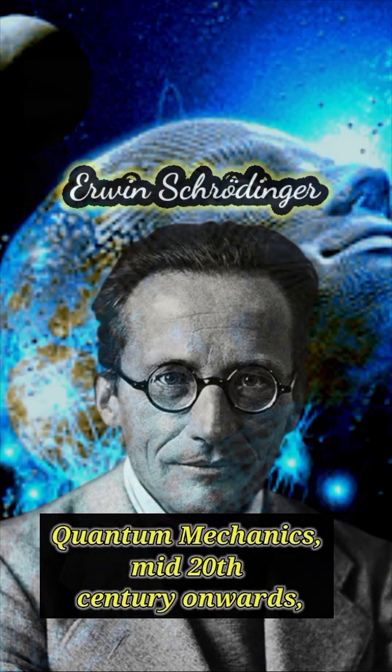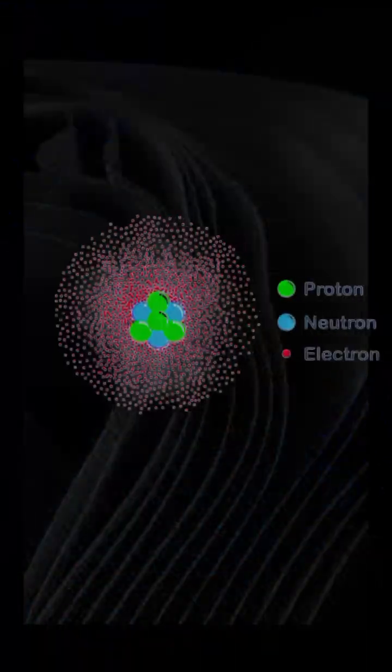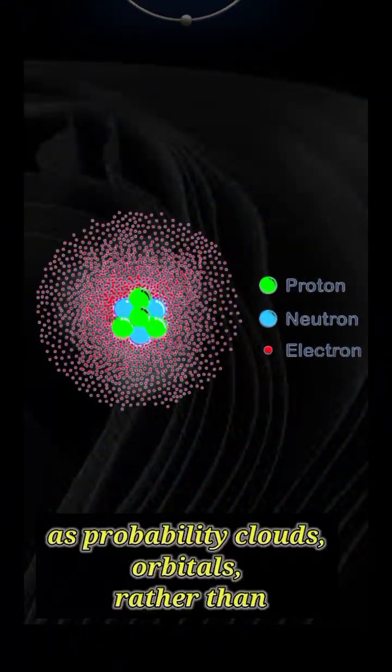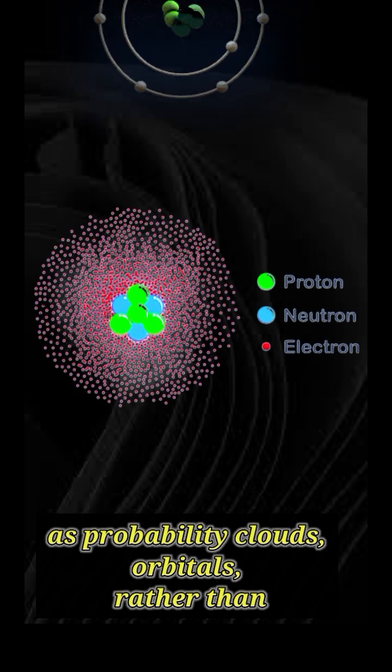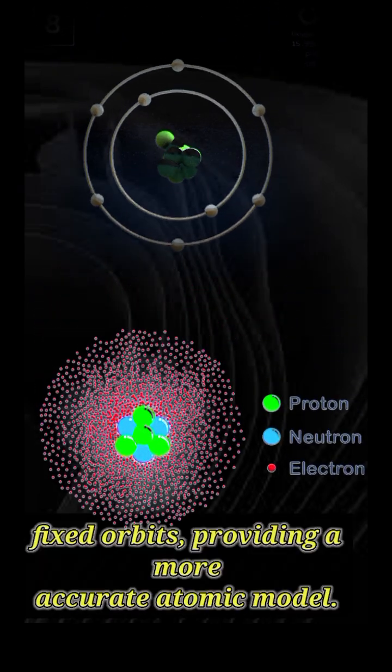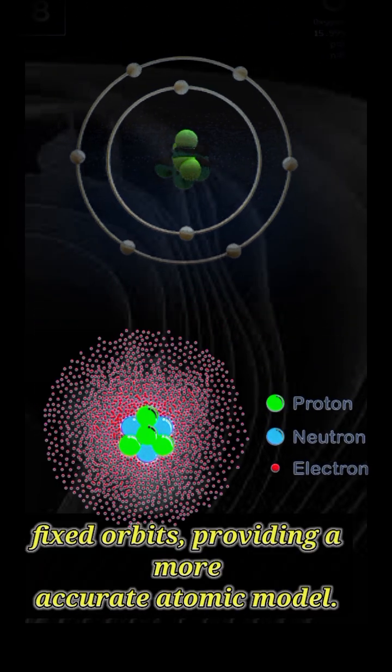Quantum mechanics, mid-20th century onward, describes electrons as probability clouds — orbitals — rather than fixed orbits, providing a more accurate atomic model.